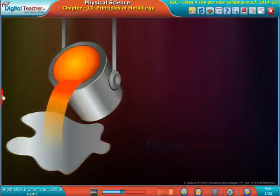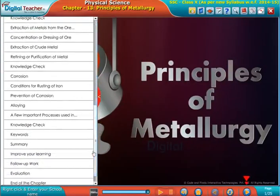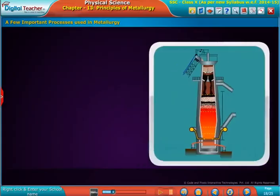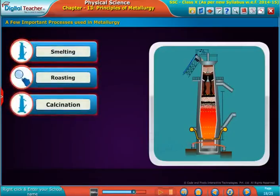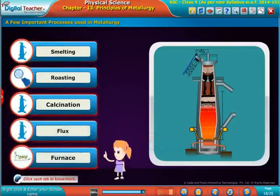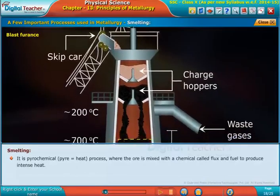Welcome to the chapter Principles of Metallurgy. A few important processes used in metallurgy are shown on screen. They are smelting, roasting, calcination, flux, and furnace. Click each tab to know more.